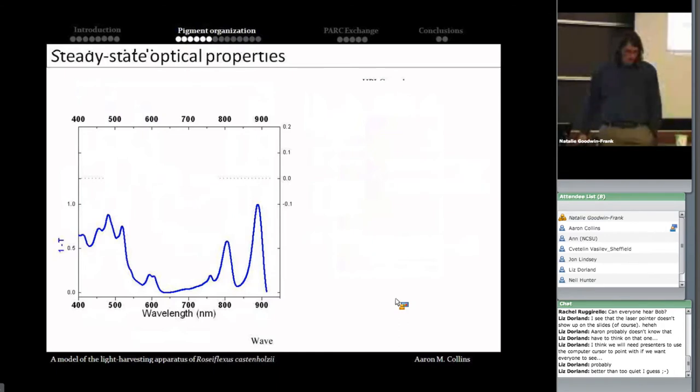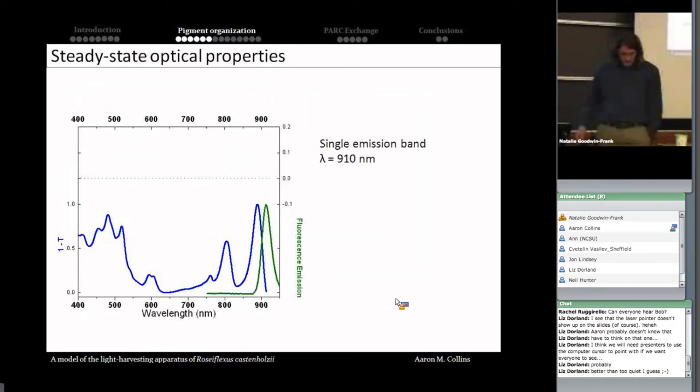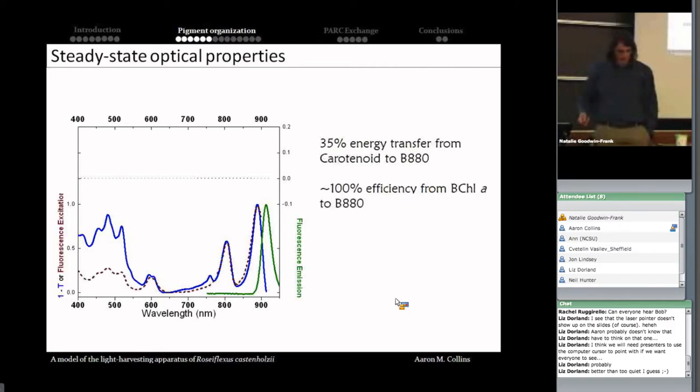These all separate quite nicely under HPLC conditions, and their ratio can change depending whether we grow the cells aerobically or anaerobically and then purify the complexes from them. All right, so we'll talk now about some steady-state optical properties of the complex itself. All of these experiments were done in a cryostat at 77K because you can get a lot more electronic structure. A lot of the bands sharpen up when you work at low temperature. There's a single emission band from this complex regardless of the excitation wavelengths we choose. It occurs at about 910 nanometers. What this means is if you were to shine light in the carotenoid region or the bacteriochlorophyll region, that excitation is rapidly transferred to the long wavelength band at 880 nanometers. A fraction of that is lost as fluorescence, that's what we observe in this experiment, while the rest is most likely trapped by the reaction center.